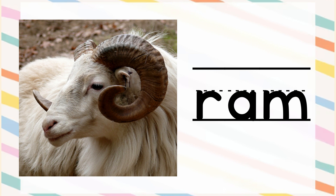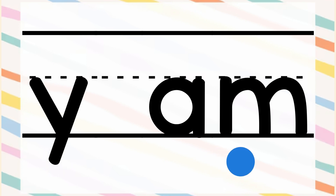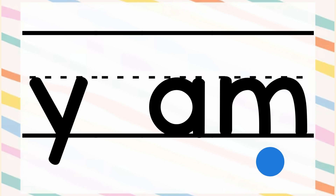The sound of letter Y is 'y', and AM makes the sound 'am'. So when we read it together it becomes: Y - am - yam!